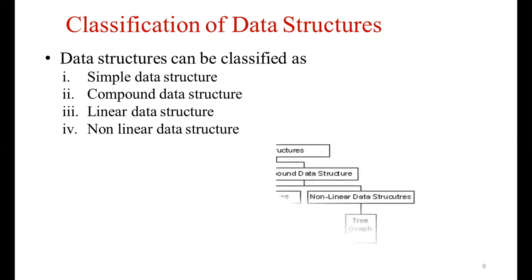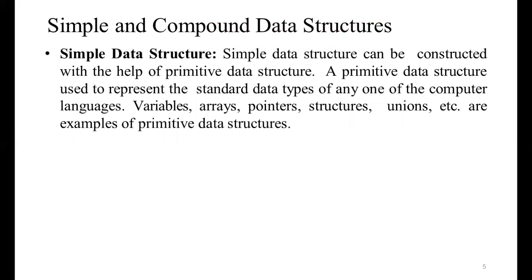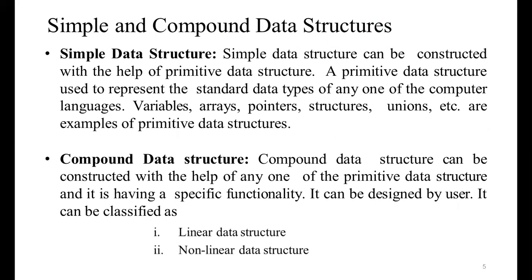A simple data structure can be constructed with the help of primitive data types. Primitive data types are the default, built-in data types — that is, integer, float, double, and character. A primitive data structure is used to represent the standard data types of any computer language. Variables, arrays, pointers, structures, unions, etc. are examples of primitive data structures.